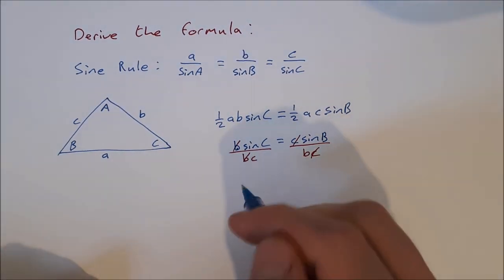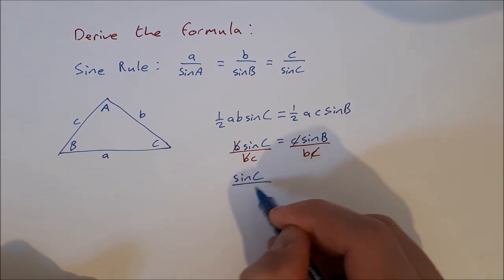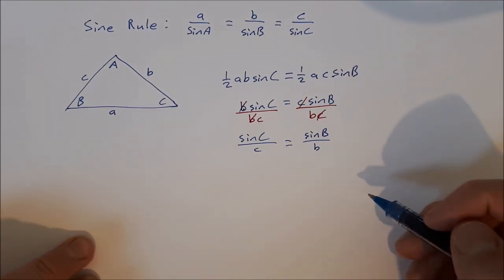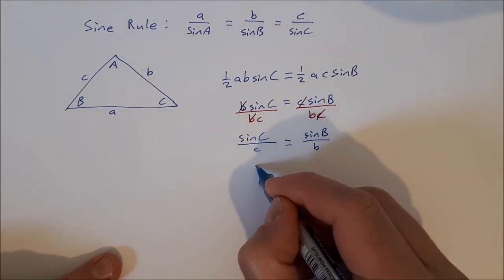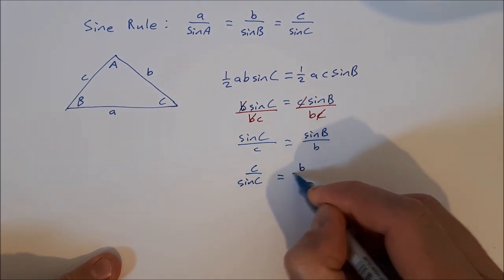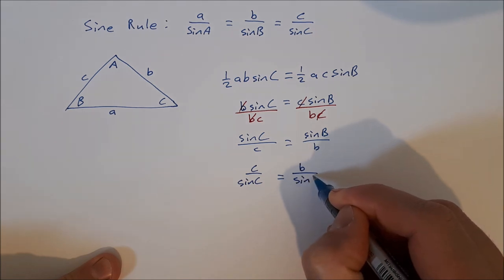I'm left with sine C over c is equal to sine B over b. And then I can invert both sides to get c over sine C is equal to b over sine B.